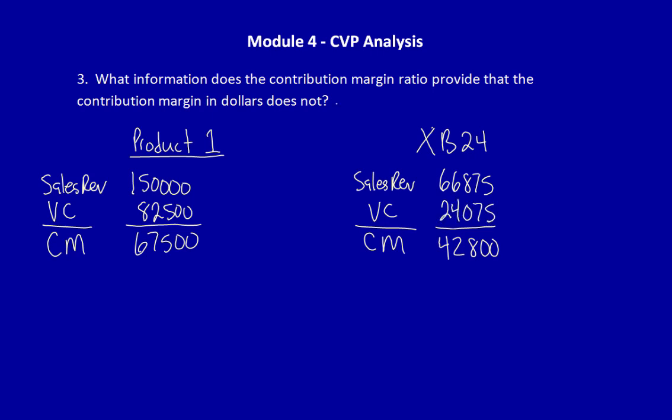Now, which product would you choose to continue to produce? Product 1 or XB24? It seems pretty clear, right? Product 1 produces $67,500 compared to $42,800.